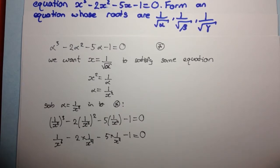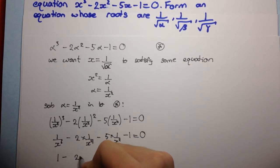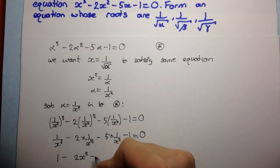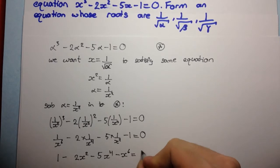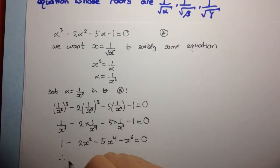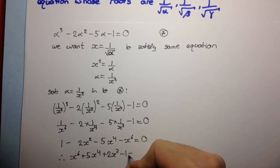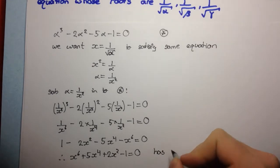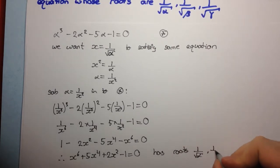Therefore, multiplying through by x to the power 6, we get x to the power 6 plus 2x to the power 4 plus 5x squared minus 1 equals 0. This equation has roots 1 over the square root of alpha, 1 over the square root of beta, and 1 over the square root of gamma.